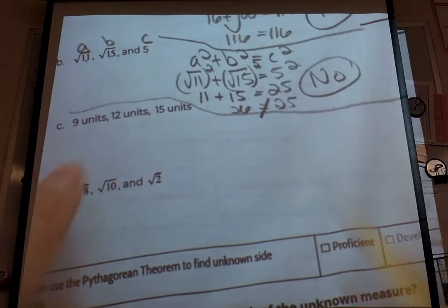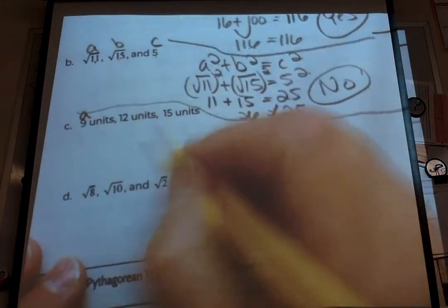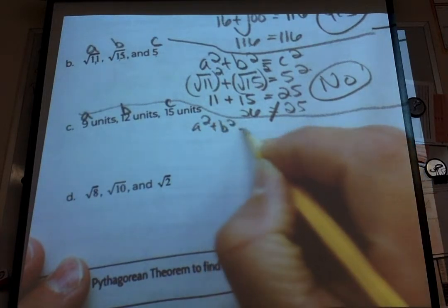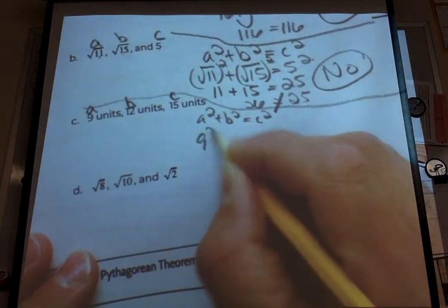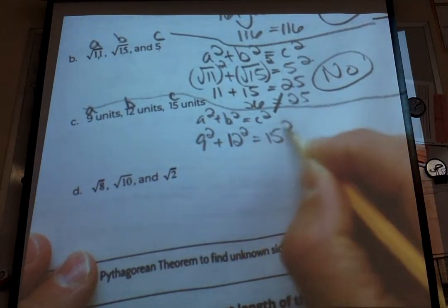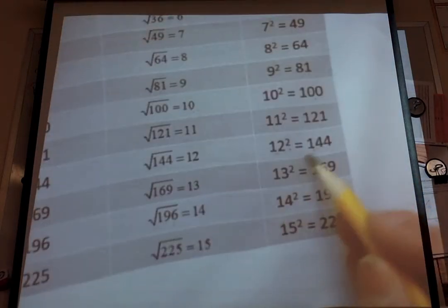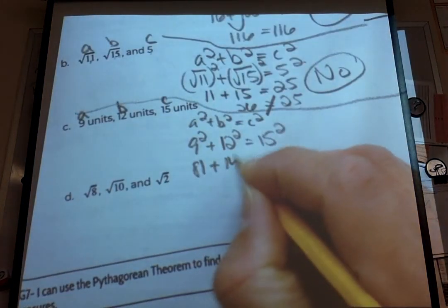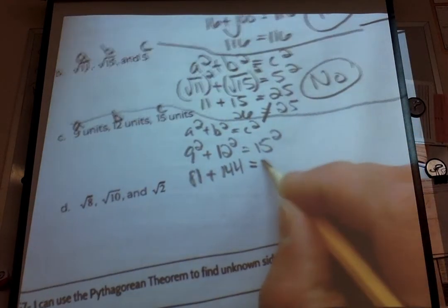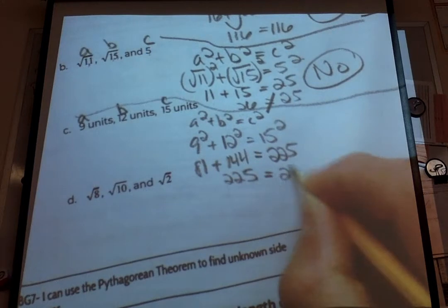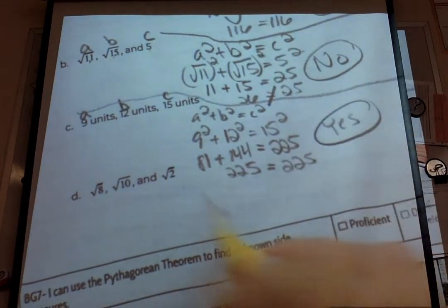Our next one: 9, 12, and 15 — all whole numbers. We know 9 is our smallest, 12 is next, and 15 is our largest. So: 9 squared plus 12 squared equals 15 squared. Using the chart if needed: 9 squared is 81, 12 squared is 144, and 15 squared is 225. Does 81 plus 144 equal 225? Yes — 81 plus 144 is 225. So 225 equals 225. Letter C works — it is a right triangle.